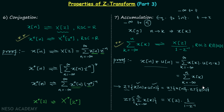Now we understand how we get the region of convergence. According to the convolution-in-time property, the ROC is greater than or equal to the intersection of the ROC of xn and the ROC of u(n). The ROC of u(n) is |Z| > 1, which we will obtain in the coming lectures. Therefore, the ROC after performing the accumulation of signal xn is R intersected with |Z| > 1.